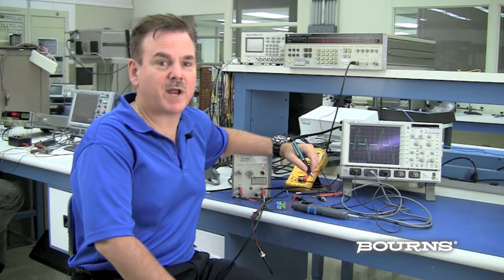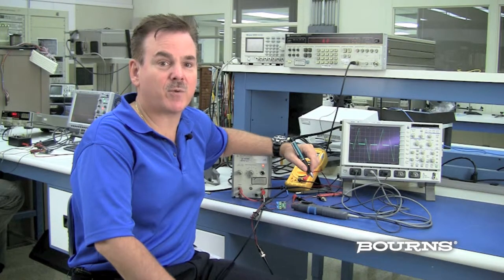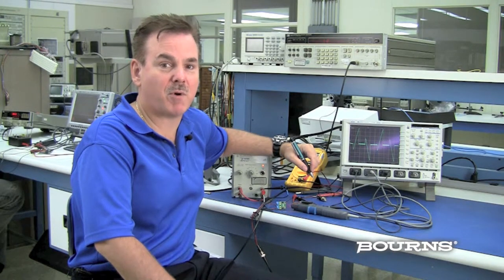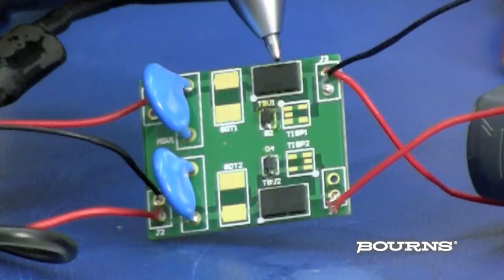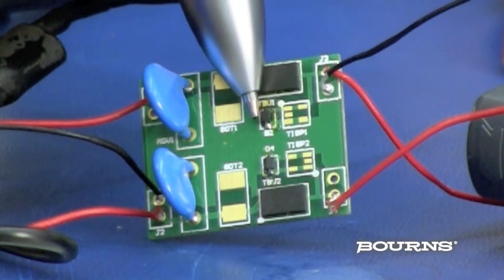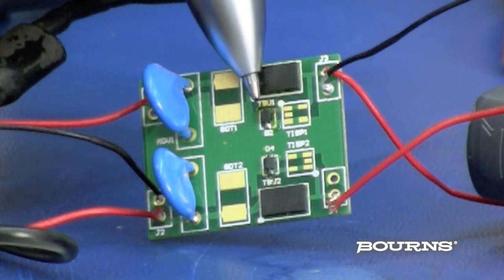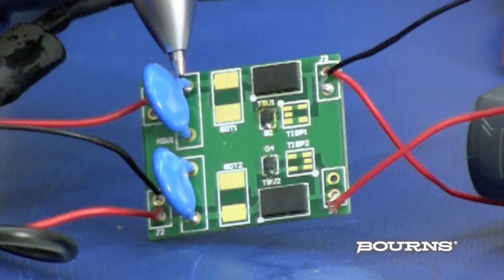This evaluation board has been created to assist designers in their evaluation of the following circuit protection components from Bourns: TBU high-speed protector, TVS diodes (transient voltage suppressors), and MOV (metal oxide varistor).